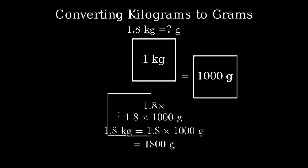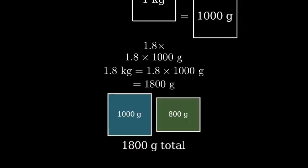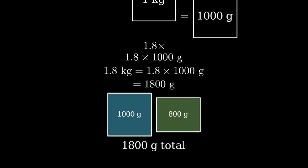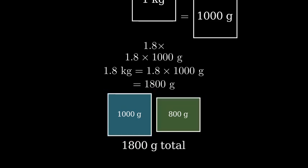To visualize this result, 1.8 kilograms is equal to 1800 grams. You can think of this as one full kilogram, which is 1000 grams, plus 0.8 more kilograms, which is 800 additional grams. So there you have it.